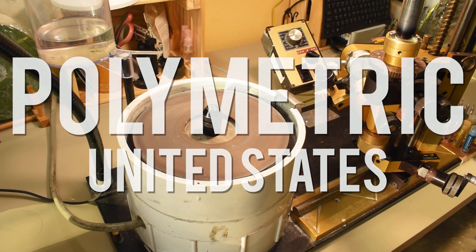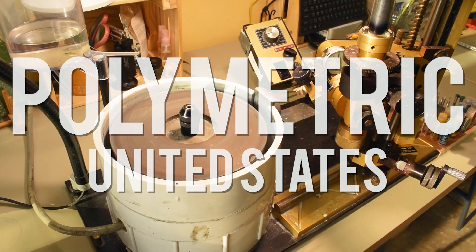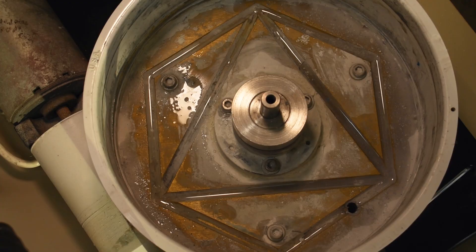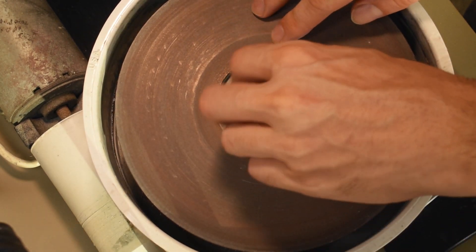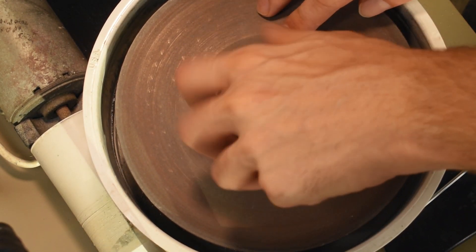Today on World of Faceting Machines, we're looking at the Scintillator 88 from Polymetric. Polymetric began making faceting machines in 1990, and this is their flagship model made in Washington, USA.